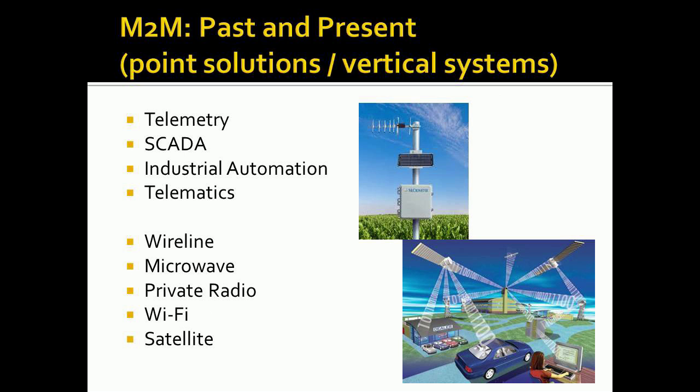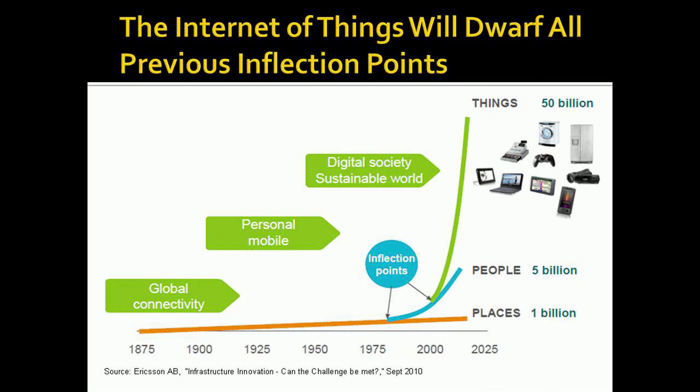Most of us know about machine-to-machine by other names: telemetry, SCADA, industrial automation, and telematics. It uses media like wireline, microwave, private radio, Wi-Fi, and satellite. Now, what's happening because of Moore's Law — the doubling of computer power — and the introduction of exponential technologies, which apply to more than just computers, we're going to see this transformation accelerate.